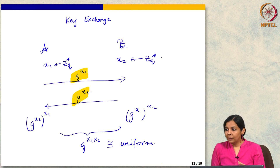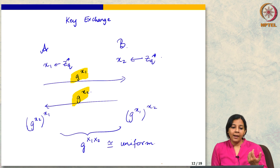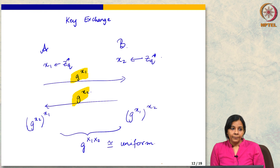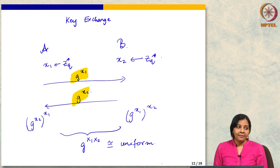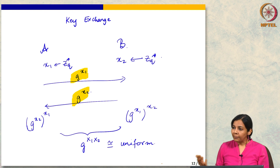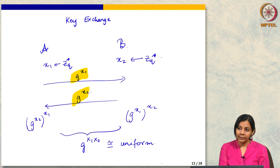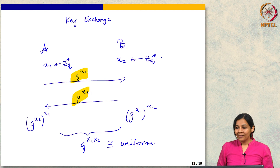Next time we will define public key encryption formally — the algorithms and the security game — and show how to build it from DDH and factoring. That will give us a very concrete scheme which we can later quantumly break. These schemes are in fact used all over the place.